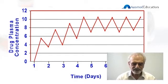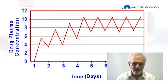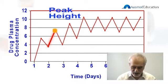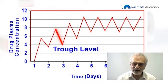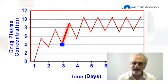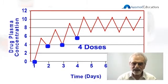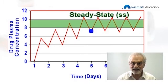The top of the first curve is called the peak height, and when it goes down that's called the trough level. When you give the second dose at the trough level, you see the absorption curve go up to a new peak height, and then with time it'll go down to a new trough level. We then give another dose — it goes up again, then down. We give another dose and it goes up again and goes down.